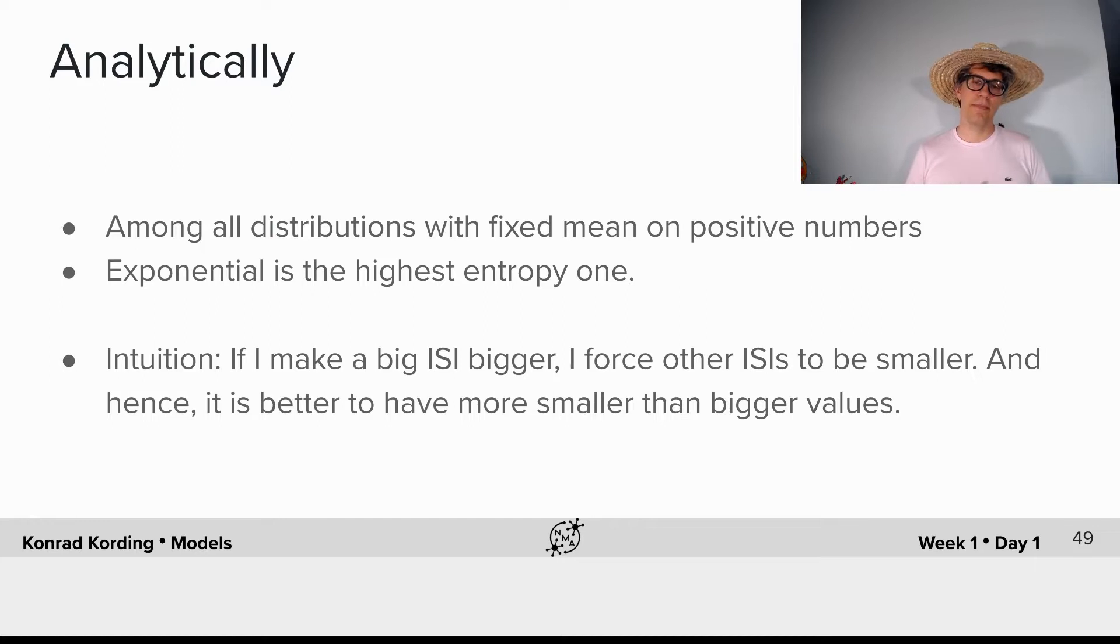And what's the intuition for that? If I take a big interspike interval and make it a little bigger, I force all other interspike intervals to be smaller. One way of implementing that is to say I take all interspike intervals and divide by the mean of that.